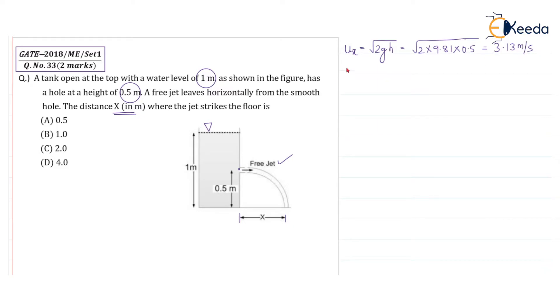And velocity in the y direction, because it is a free jet, so there is no velocity component in the y direction, which is 0. Now we will talk about the acceleration. So acceleration in the x direction is equal to 0 because it is a free jet and acceleration in the y direction is your acceleration due to gravity, g.